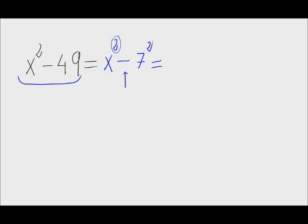This is sum times difference. The sum of the elements, x plus 7, times their difference, x minus 7.